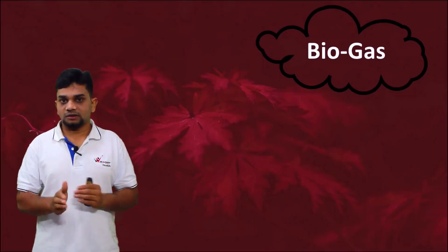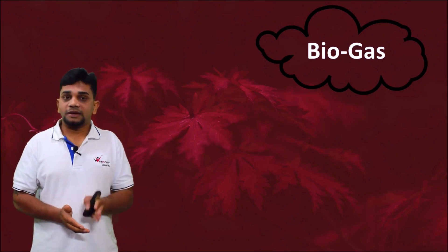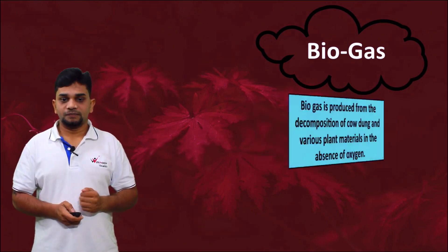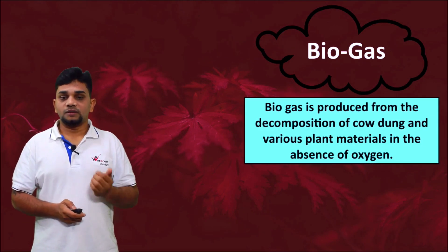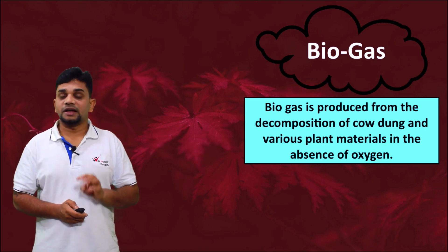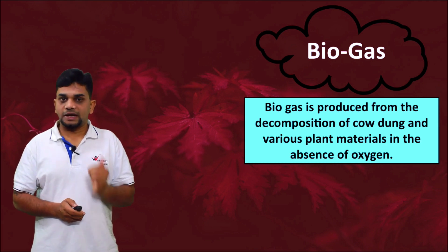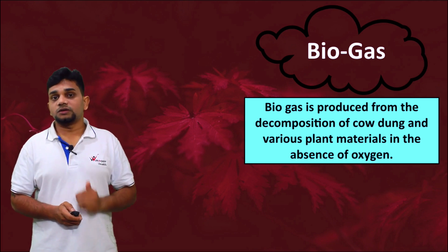Next is biogas. Biomass and biogas are similar. We get biogas by the decomposition of plant or animal material in the absence of oxygen. Cow dung or plant material, when undergoing decomposition in the absence of oxygen, produces biogas.